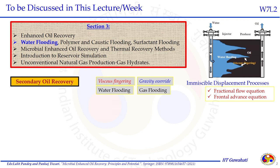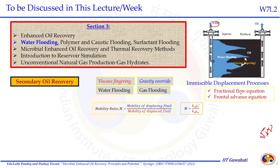We discussed how water or gas injection flows through the reservoir domain, moving oil towards the production well. Viscous fingering and gravity override are the two processes that limit efficient oil recovery during secondary recovery. The mobility ratio is used to understand the efficiency of secondary oil recovery. The displacement efficiency in terms of water saturation or oil saturation was also discussed. The mobility ratio is the ratio of displacing fluid mobility to displaced fluid mobility, where μ_O is in the numerator and μ_W in the denominator for water injection.